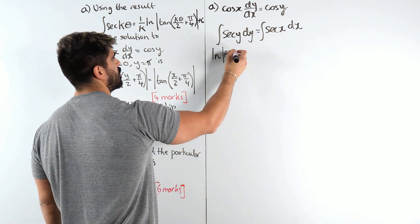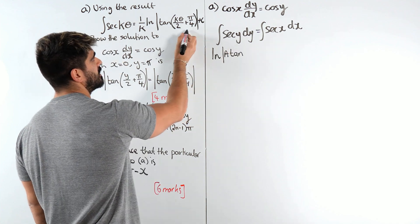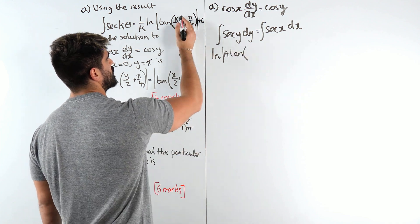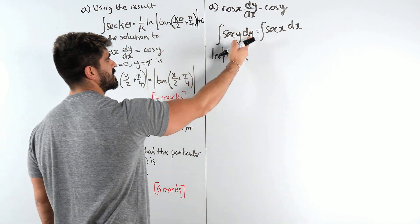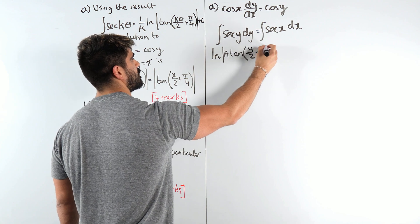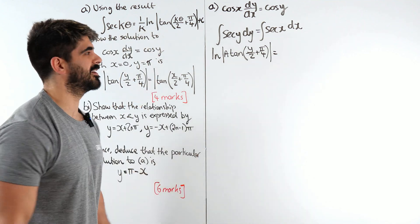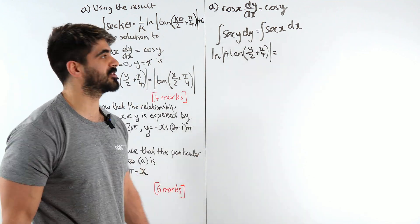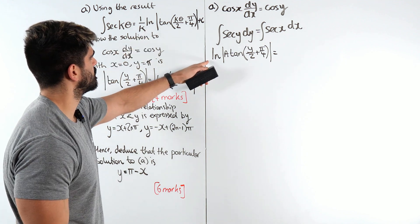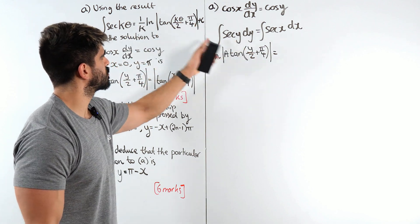So we're gonna get ln of a times tan of, here we have k is 1. So when k is 1 we get theta over 2, but remember guys the angle in this case is y. So we get y over 2 plus pi over 4. Just take a minute to digest that. So k is 1 there's no coefficient. The angle in this case is y.